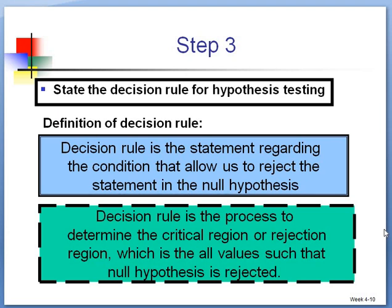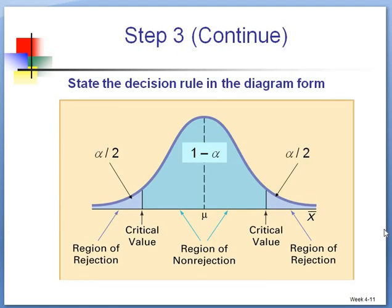Step 3 is state the decision rule for the hypothesis testing. The decision rule is the statement regarding the condition that allows us to reject the statement in the null hypothesis. We can summarize it or display it by using graph. For example, step 3, we can draw a diagram to show where is the rejection and non-rejection region. If that is a normal distribution, our mean will be equal to 0. And the blue part, left hand and right hand side, this blue part is non-rejection region, while the purple part is rejection region.